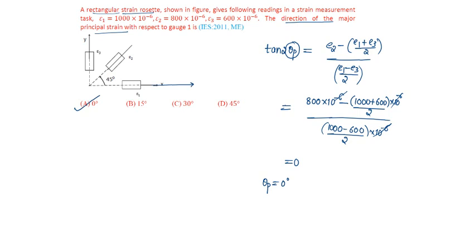That is, this is the major principal strain axis, epsilon dash of 1, at 0 degrees.